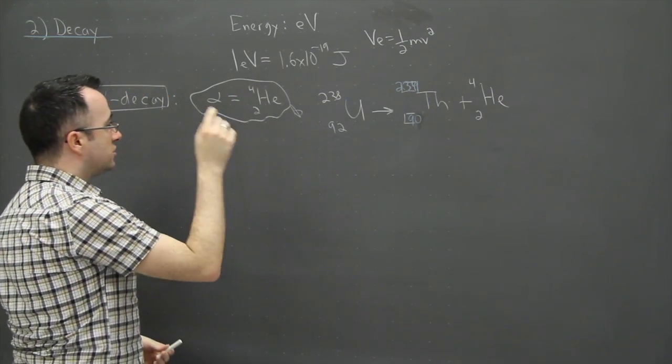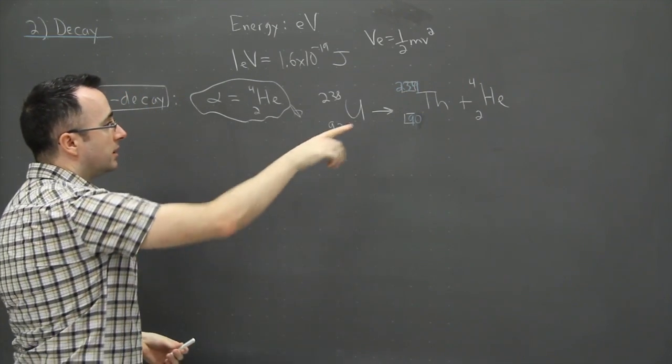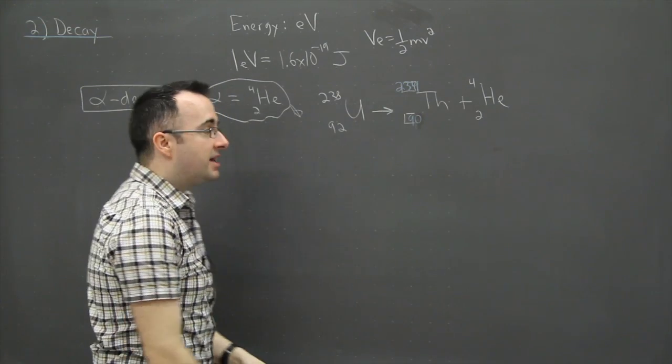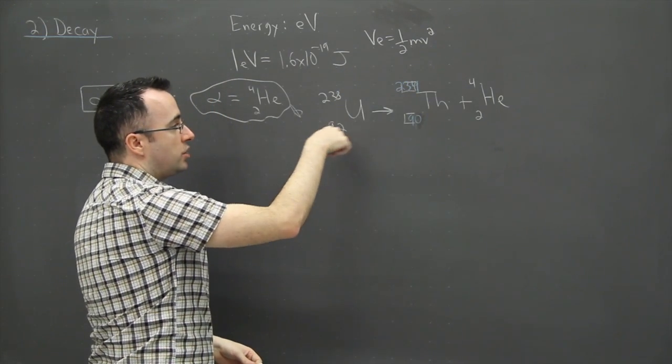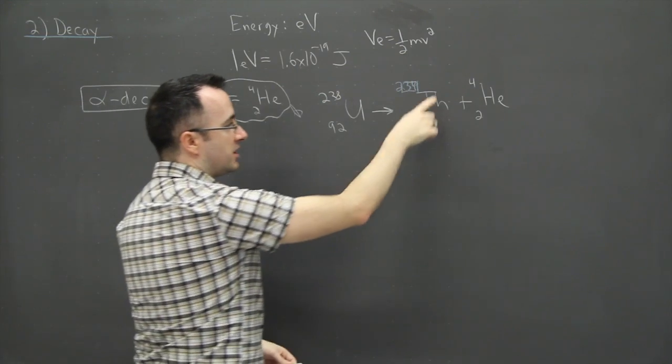Anytime you see alpha decay, just remember a helium-4 particle gets kicked out or it's added to that side. So that's how we do what's called a decay equation. It implies that this right here, we call this the parent because this is what starts off. This is actually called the daughter.